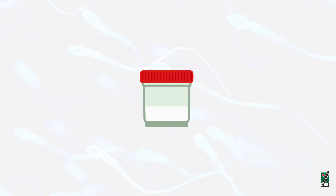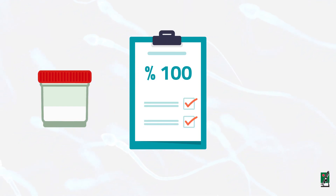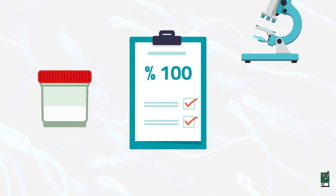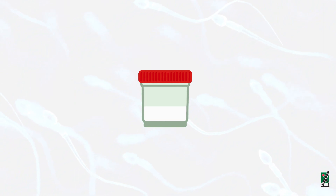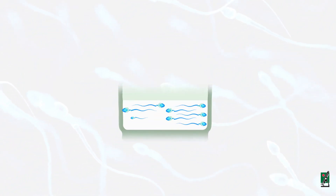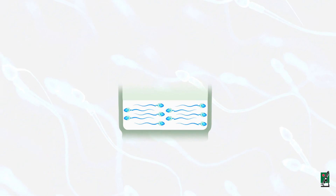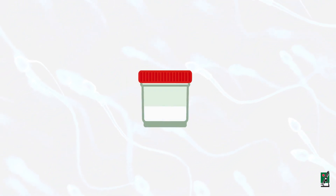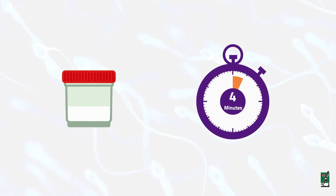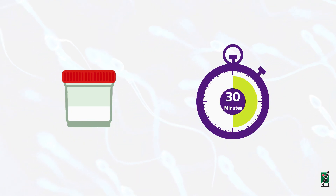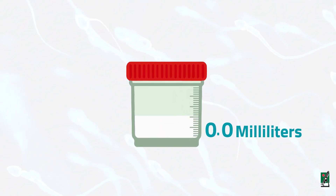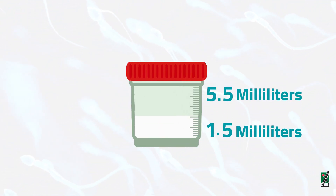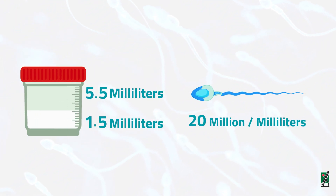A complete semen analysis measures and evaluates the quantity and quality of the fluid released during ejaculation. It also evaluates the microscopic moving cells called sperm. Semen is a viscous, whitish liquid that contains sperm and the products from several glands. It is fairly thick at ejaculation but thins out or liquefies within 10 to 30 minutes. Each semen sample is between 1.5 and 5.5 milliliters of fluid, containing at least 20 million sperm per milliliter.